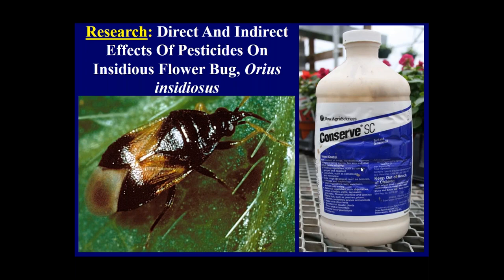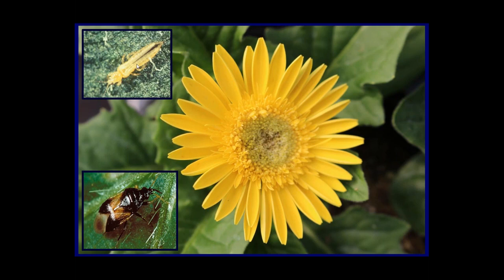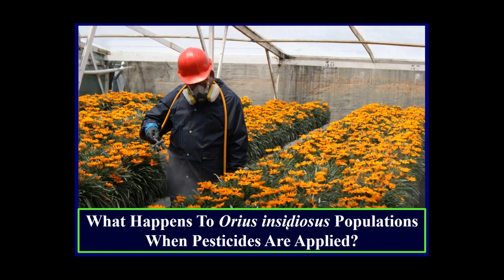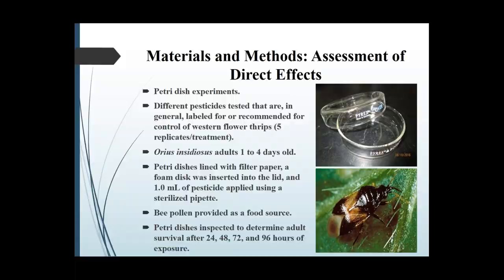Now we move to research with our second biological control agent: the insidious flower bug, also known as Orius insidiosus. They inhabit the same environment as western flower thrips adults — for example, in Gerber daisy flowers — and adults will attack thrips in those flowers. Our general objective was to determine what happens to Orius insidiosus populations when various pesticides are applied.